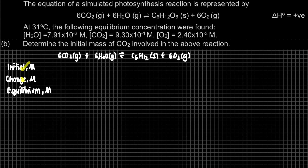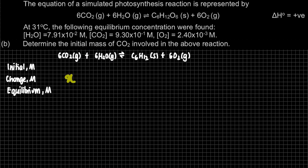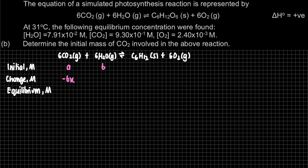The information given is equilibrium concentrations, so the units in the ICE table will be molarity. For our initial row, the reactant CO₂ has an unknown initial concentration — we call it A. For the product side, since glucose is solid it is excluded; O₂ initially has zero concentration. For the change row, reactants decrease by their stoichiometric multiple of X (so CO₂ changes by −6X and H₂O by −6X), and O₂ increases by +6X.